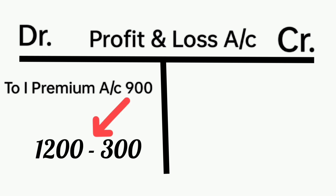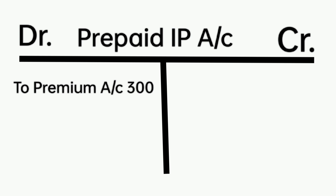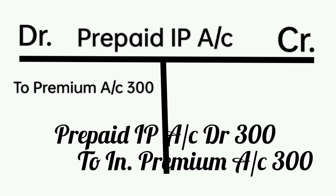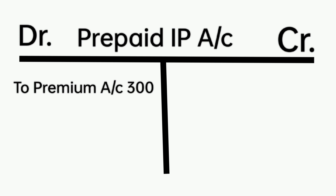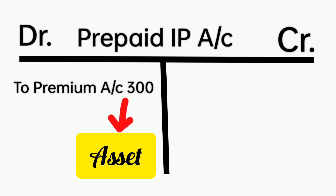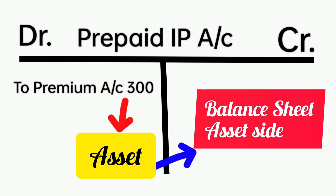Here, insurance premium Rs.900 debited in the Profit and Loss account is arrived at by deducting prepaid insurance premium Rs.300 from the total premium Rs.1,200. Then take the prepaid insurance premium account. The adjusting journal entry is: prepaid insurance premium account debit Rs.300 to insurance premium account Rs.300. Therefore, prepaid insurance premium account has been debited to insurance premium account Rs.300. This prepaid insurance premium is an asset. Therefore, it will appear at the asset side of the balance sheet as prepaid insurance premium Rs.300.